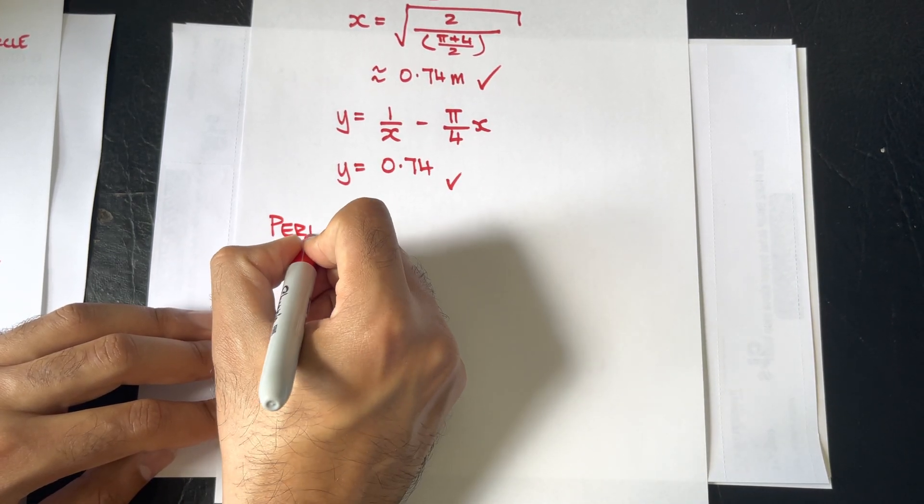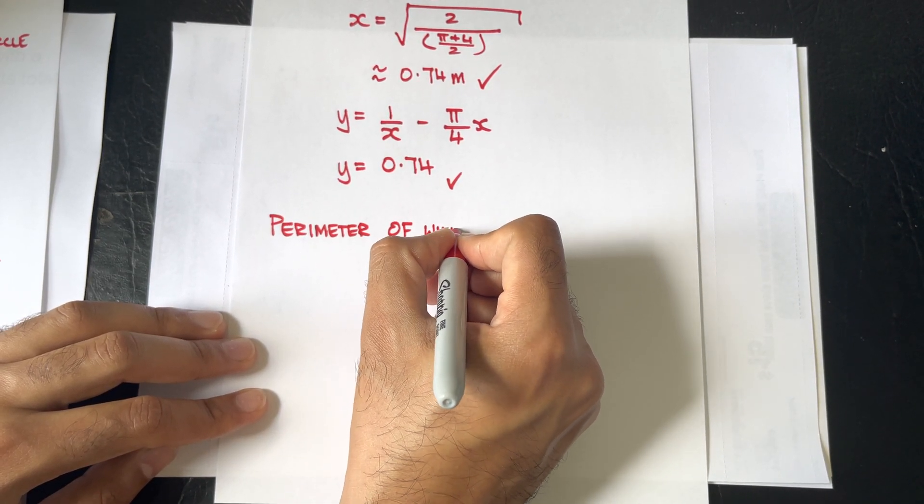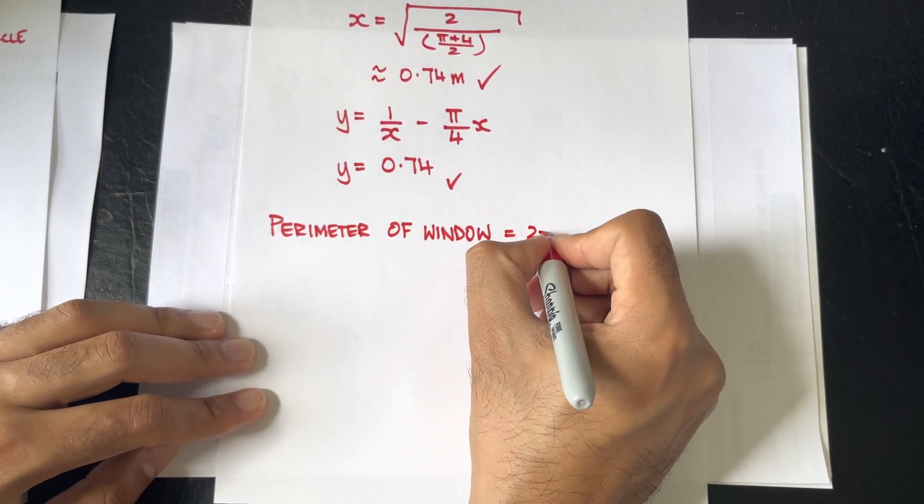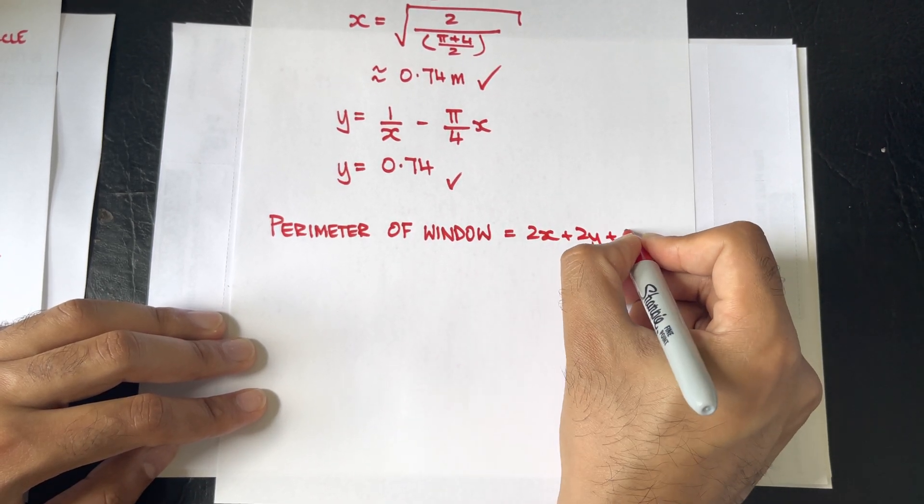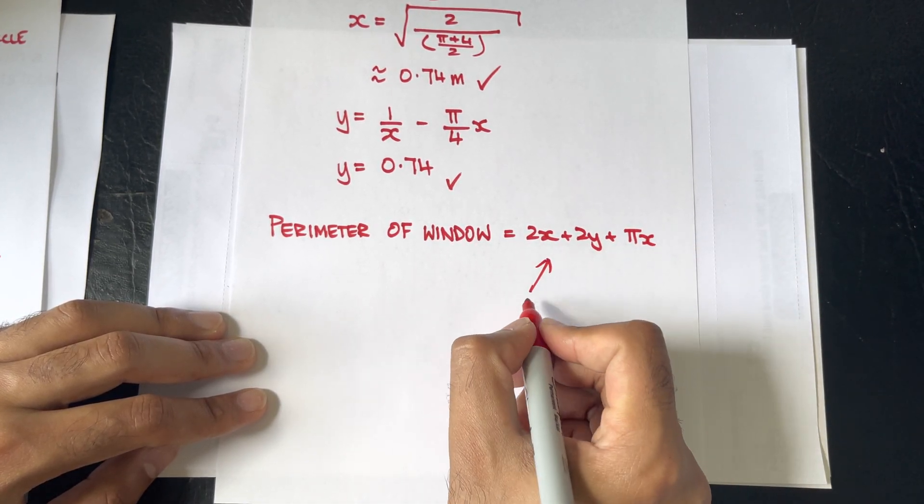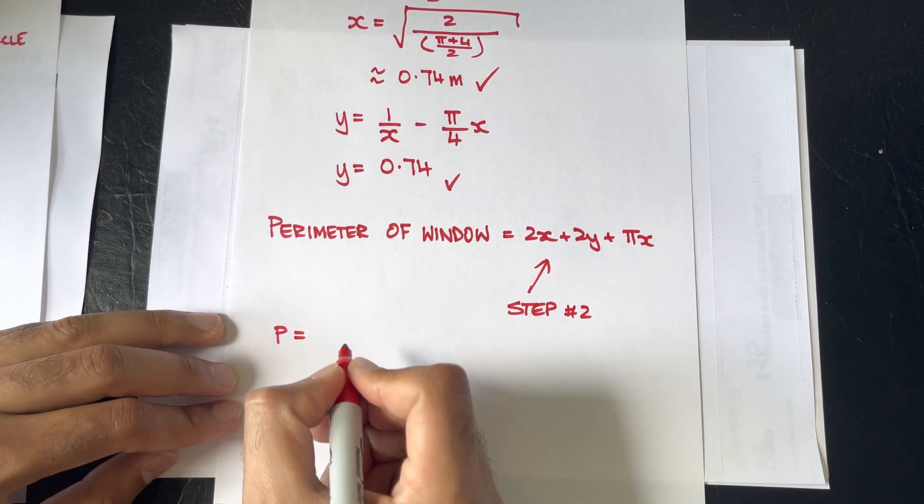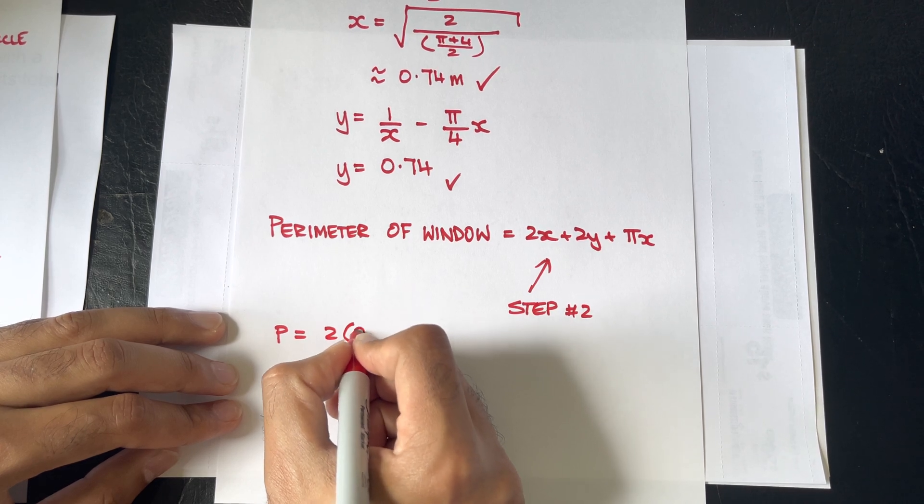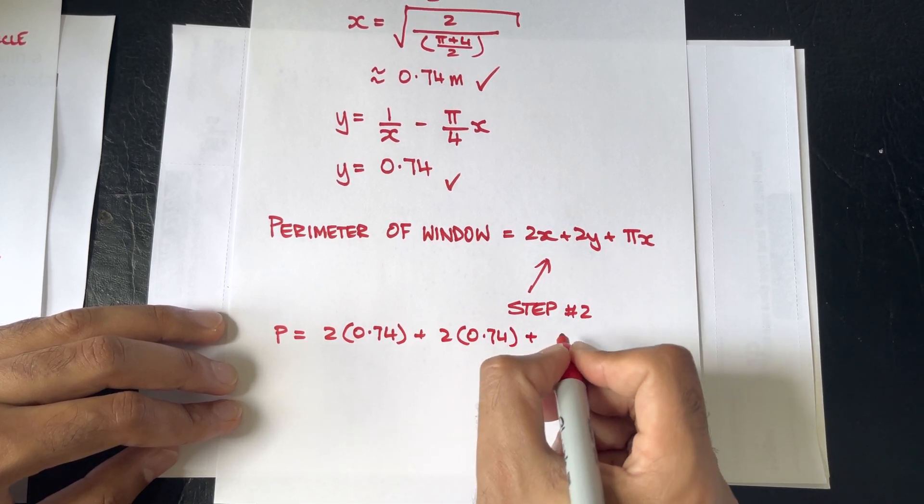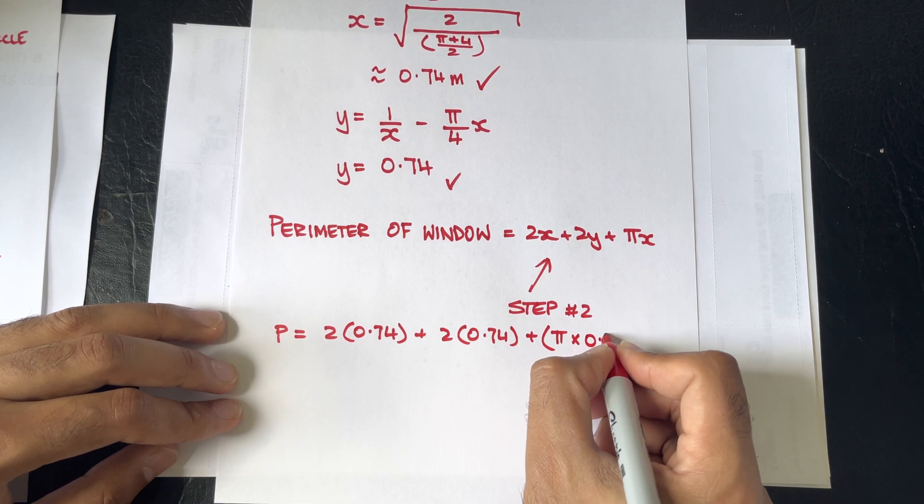So, the perimeter of window equals 2x plus 2y plus πx, and we know that from our step number 2. So the perimeter is 2 times 0.74 plus 2 times 0.74 plus π being multiplied by 0.74.